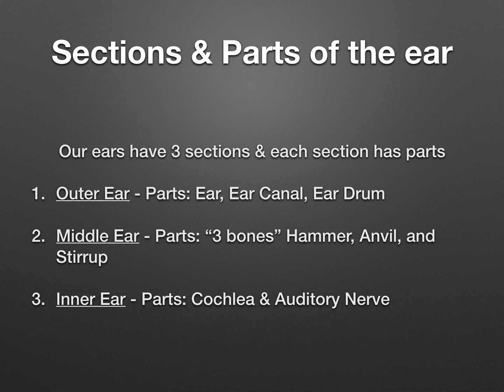The inner ear parts are the cochlea and the auditory nerve. With both the ear and the eye, they will both end with a nerve, because they're sending messages to the brain.